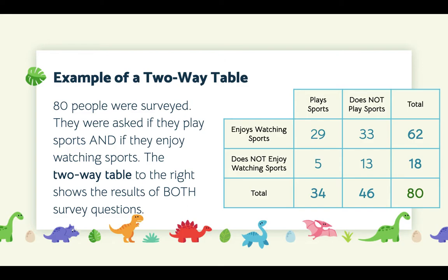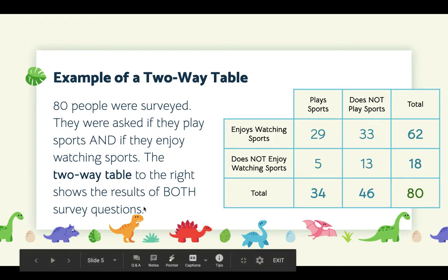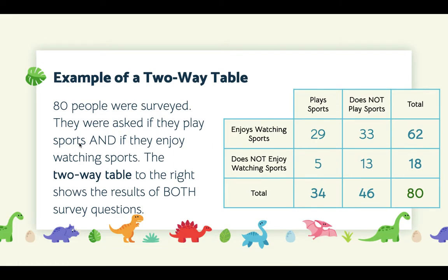Here's an example of a two-way table. There are 80 people who were surveyed. They were asked if they play sports and if they enjoy watching sports. The two-way table shows the results of both of these survey questions: the first question was if they play sports, and the second was do they enjoy watching sports.